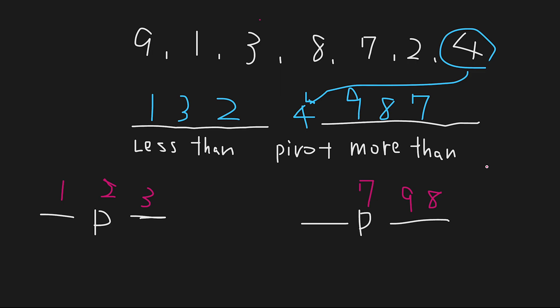At the end of the second process, the unsorted sequence looks like 1, 2, 3, 4, 7, 9, 8.